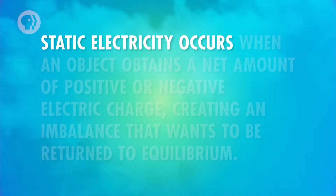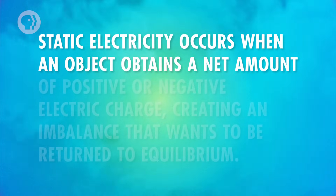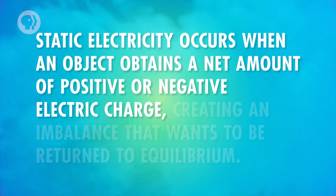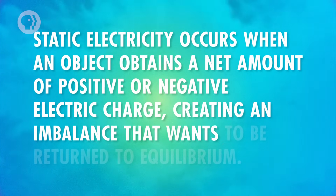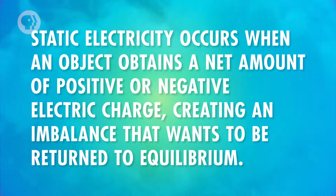Static electricity occurs when an object obtains a net amount of positive or negative electric charge, creating an imbalance that wants to be returned to equilibrium. Its effects aren't always as dramatic as lightning, though.